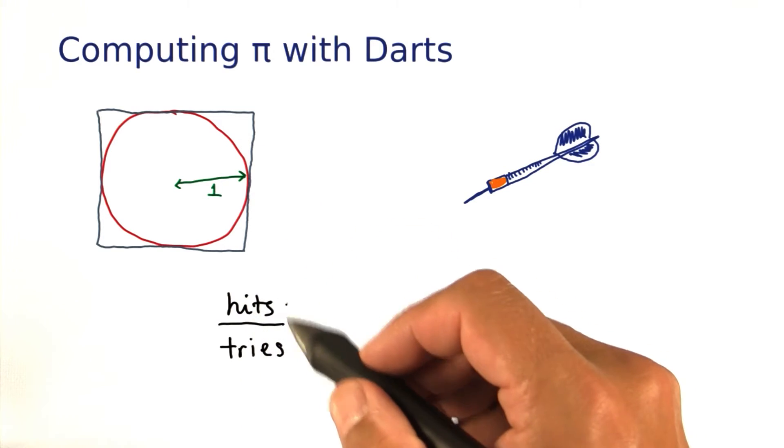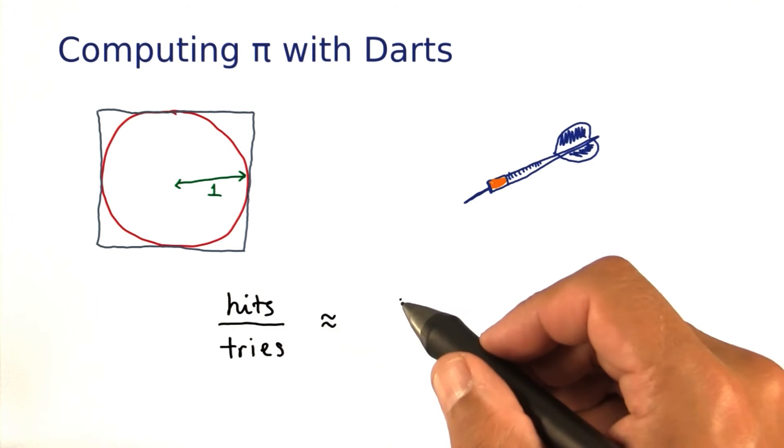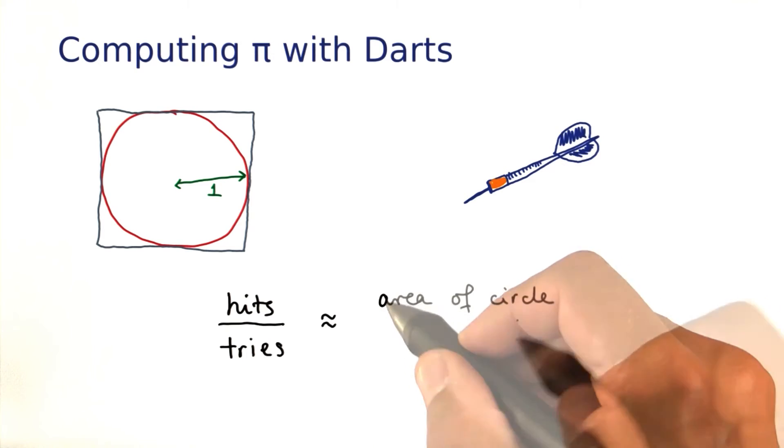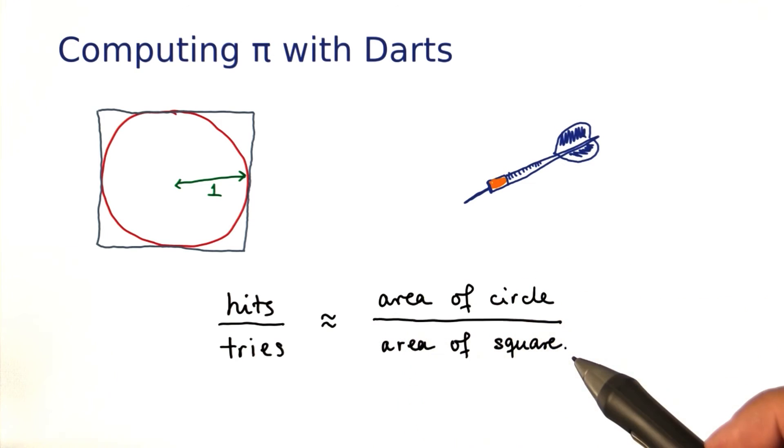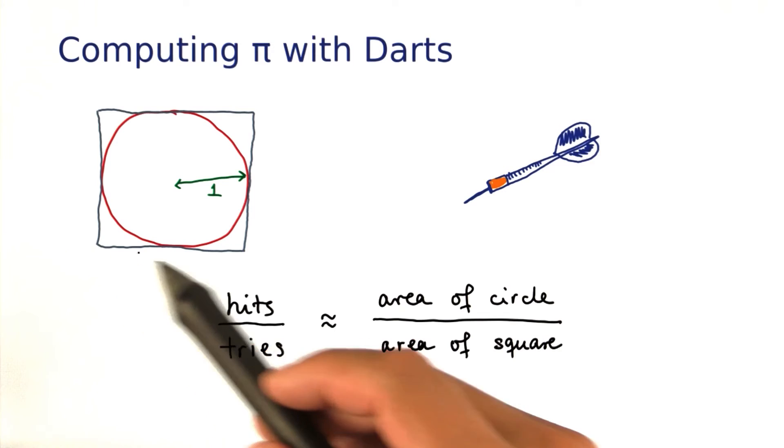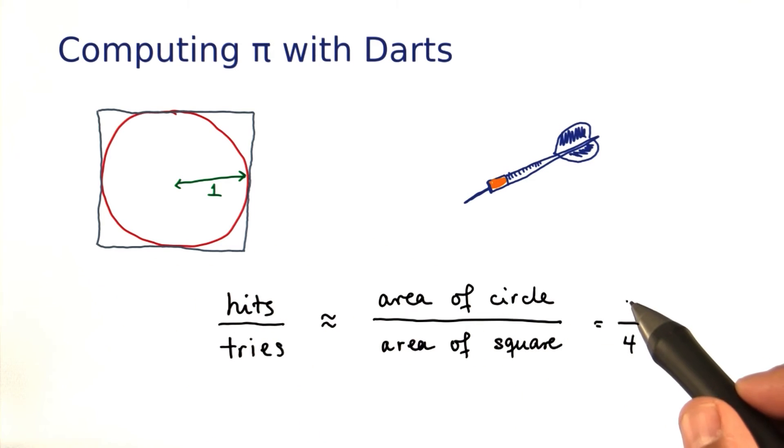The ratio of the hits over the tries is going to be approximately the same as the area of the circle over the area of the square. The square has side length 2, so that's 4. The area of the circle is the desired pi.